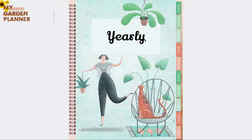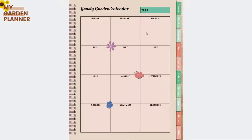This is the yearly section — it has a very beautiful art design. The yearly section is actually a yearly garden calendar, a year-at-a-glance overview where you can write down the year and plan all your garden activities month by month.